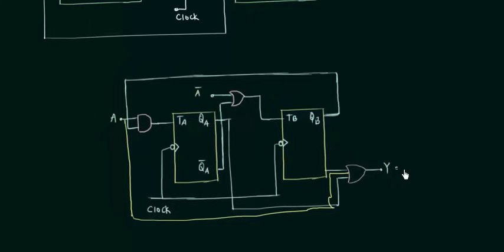Now you can see that the Y is QB complement, this is QB complement, and QA is another input, so it's QA OR A.